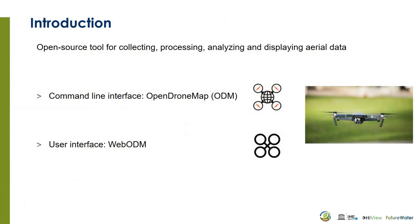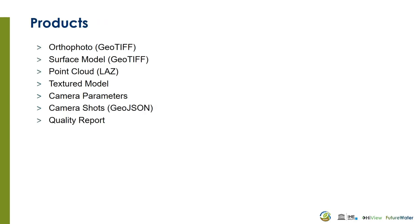OpenDroneMap is an open source tool for collecting, processing, analyzing and displaying aerial data such as from drones. If you want to use the command line interface we use OpenDroneMap or ODM. Here in this tutorial we'll use a user interface which is called WebODM. With OpenDroneMap you can derive products such as orthophotos, surface models, point clouds, textured models, the camera parameters, camera shots and the quality report.